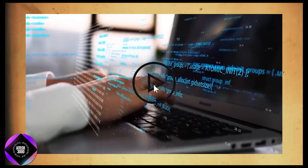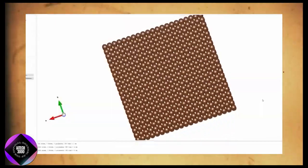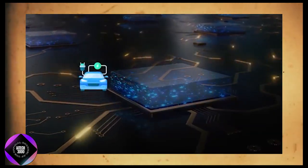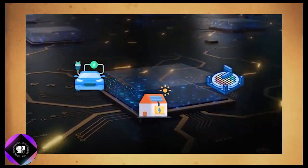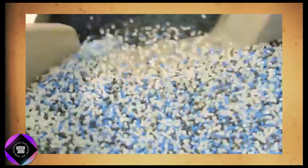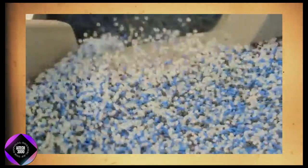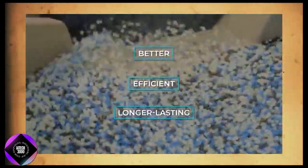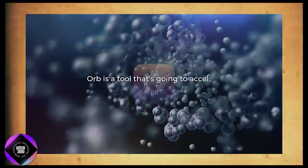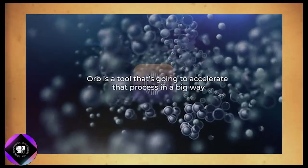Why does this matter? We're in the middle of a massive shift towards renewable energy and materials are at the core of that, batteries for electric cars, solar panels, semiconductors, you name it. The faster we can simulate and design these materials, the faster we can create better, more efficient, and longer-lasting products. Orb is going to accelerate that process in a big way.